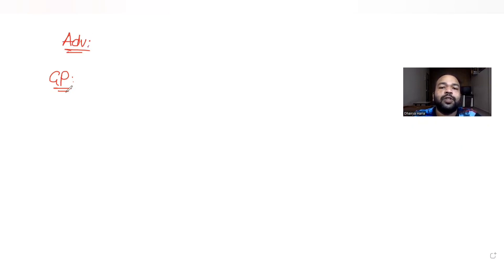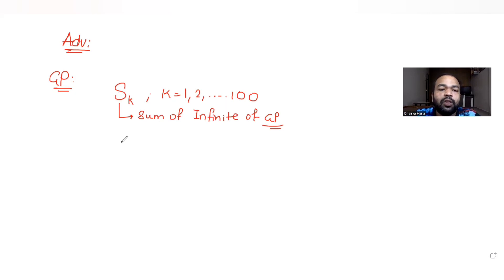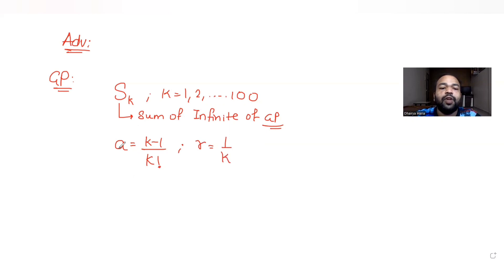The question says that S_k, where k goes from 1 to 100, is the sum of infinite terms of a geometric progression. The first term is given as (k-1) upon k factorial, and the common ratio r is given as 1/k.